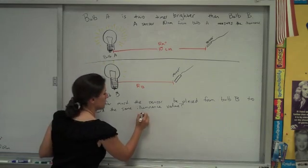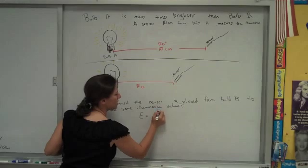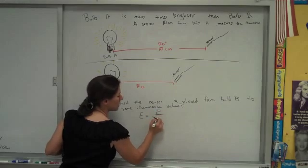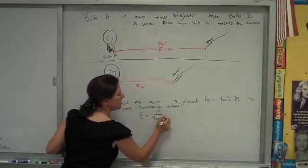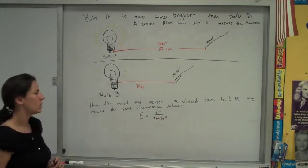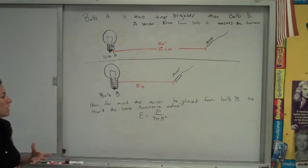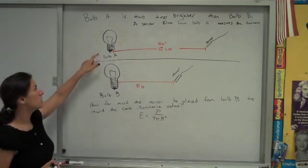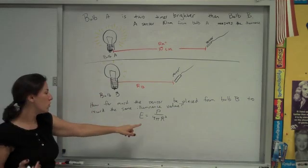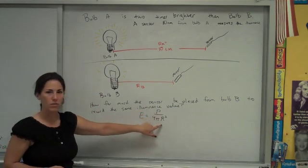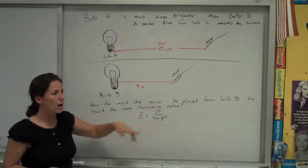So illuminance, E, relates to the power of the source as well as the distance from the source that you're measuring at. And so in this case, since we know we want the illuminance to be the same in these two cases, if you knew that value and you knew the power, you could solve for the distance. You knew the distance, you could solve for the power. That's one way to go.